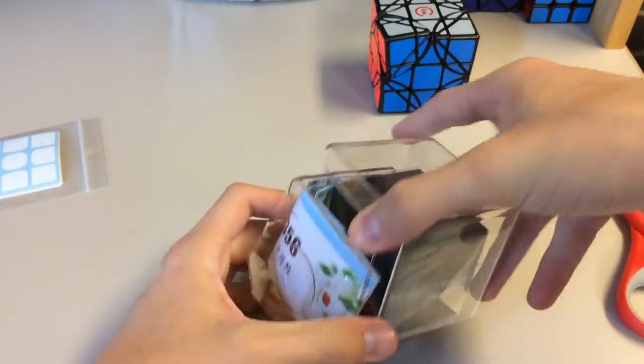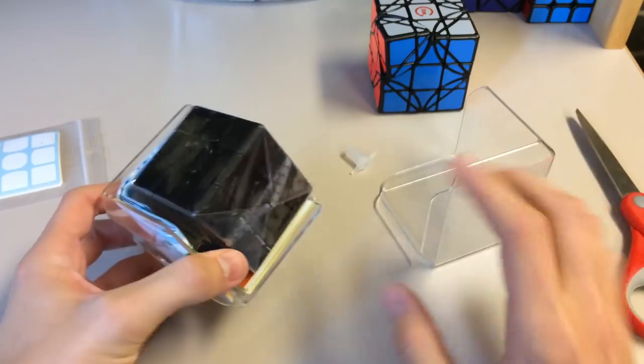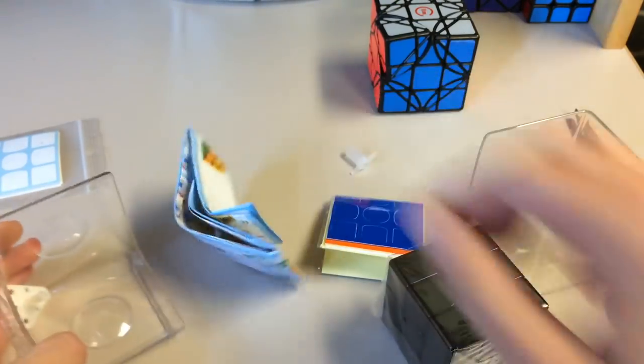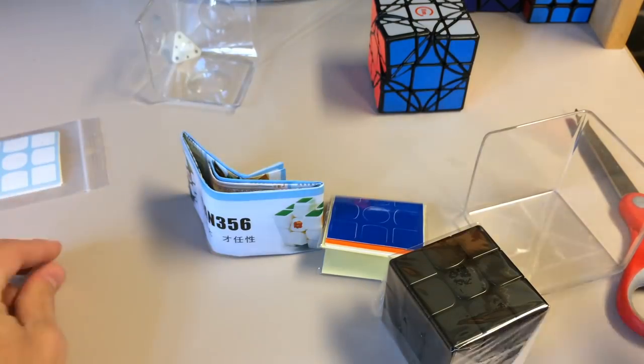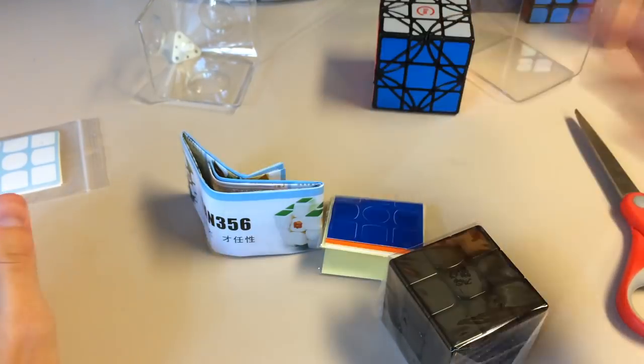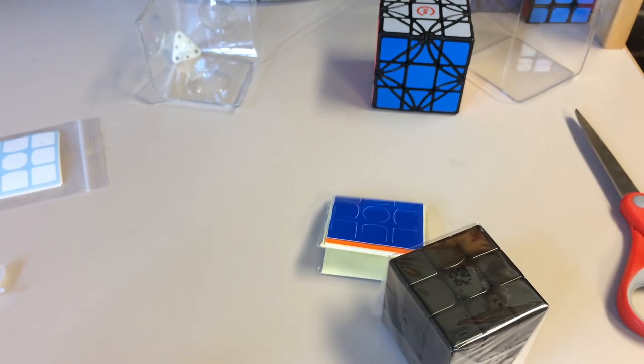And so let's move on to the Gans 356, which I've been waiting for for so long. And they're kind of in limited stock, I think. Like the black ones were out of stock very quickly on the Cubicle.us. So go ahead and buy them, or buy it ASAP if it's good, hopefully. I've heard great things about it.